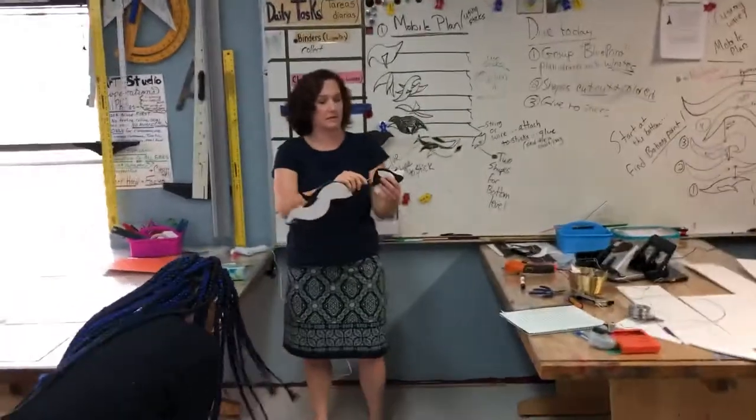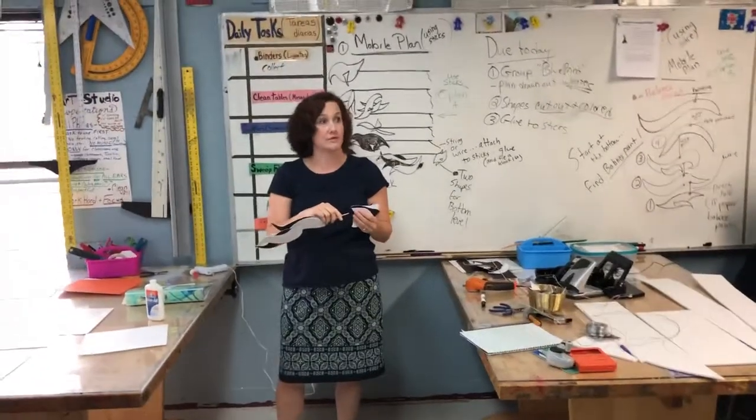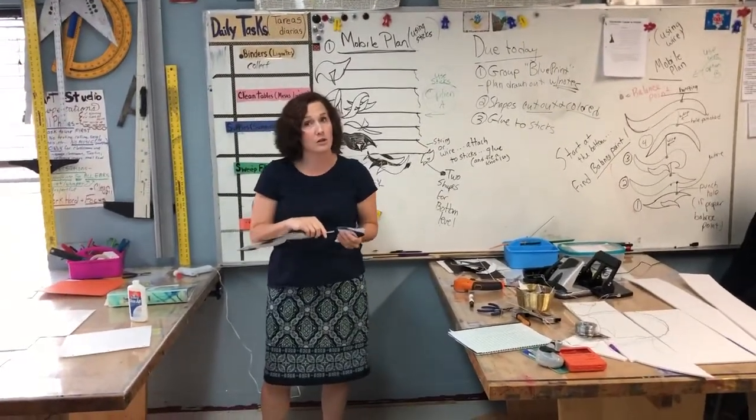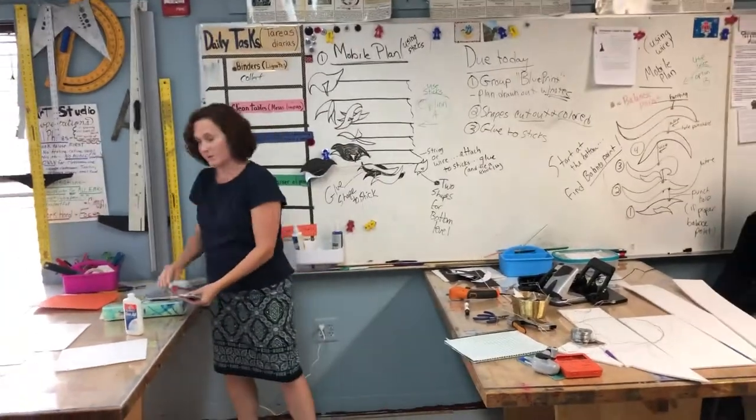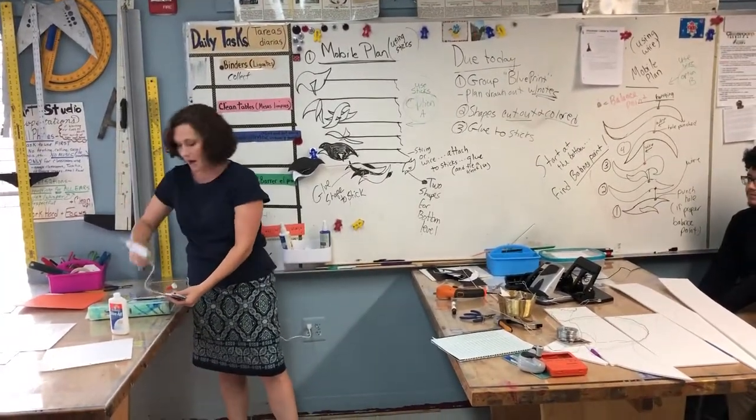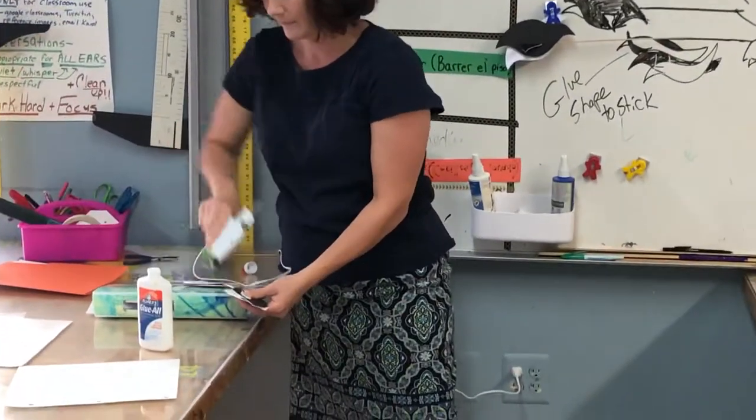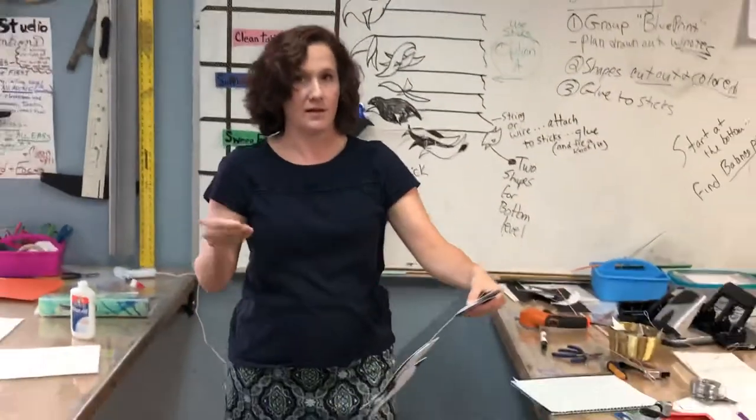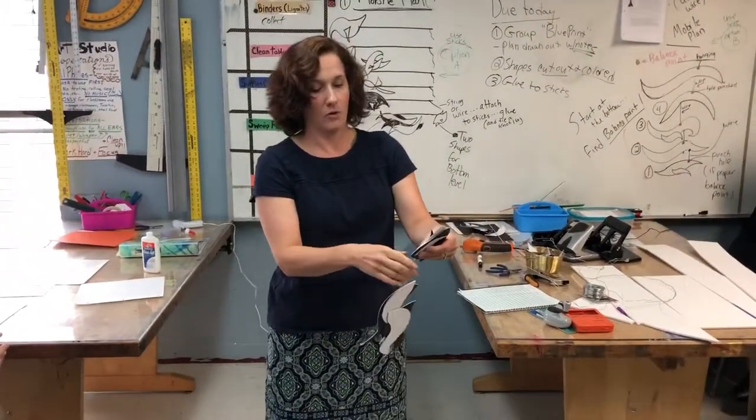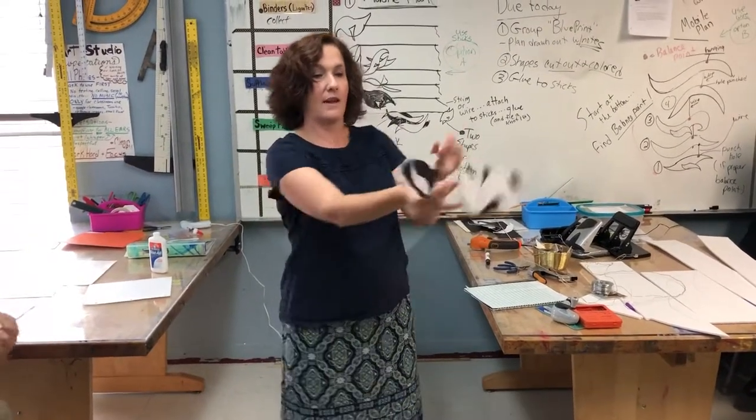Now, the next thing is, so that it stays, you want to use the Elmer's glue because it's stronger, believe it or not, than the hot glue. The hot glue just sticks it right away. So, you're going to use the Elmer's glue first, and then you can take some hot glue and add a dab of hot glue inside. Then hold it tight. Don't burn yourself like I just did. Hold it tight, and then you should be good.